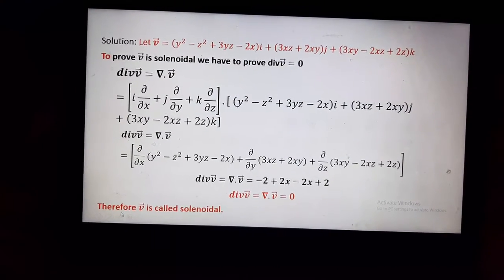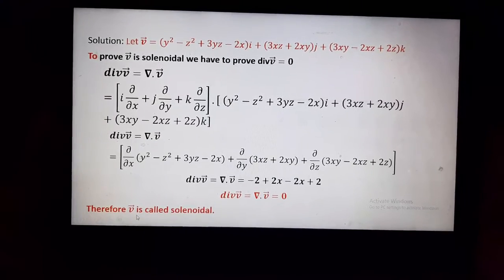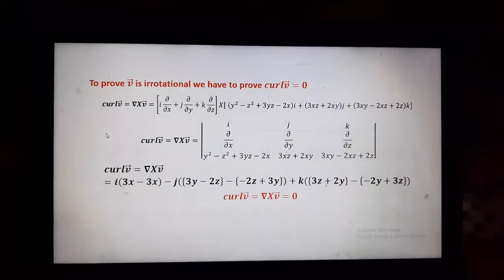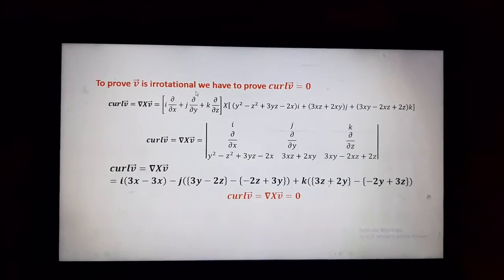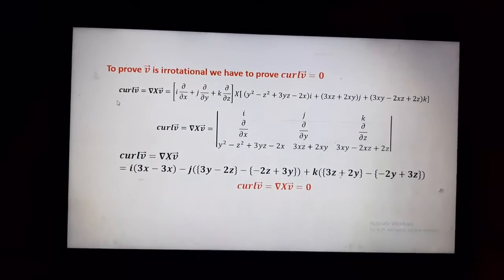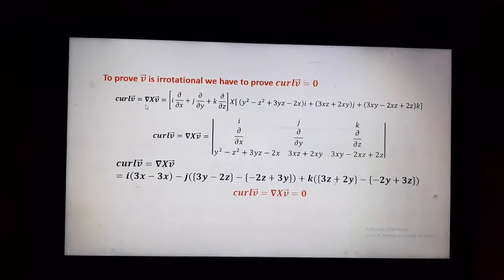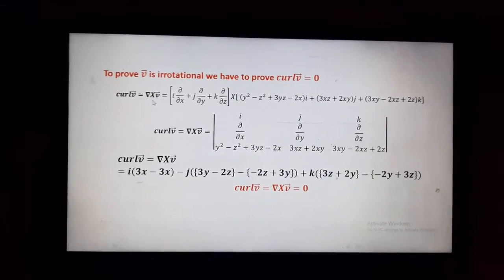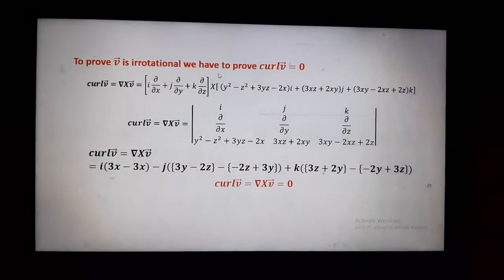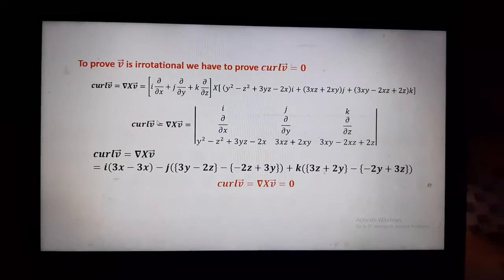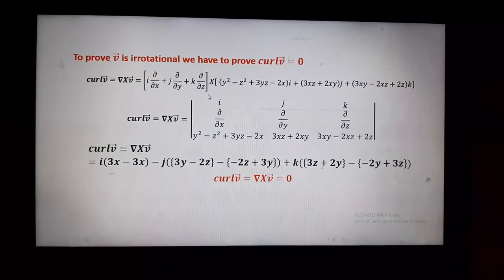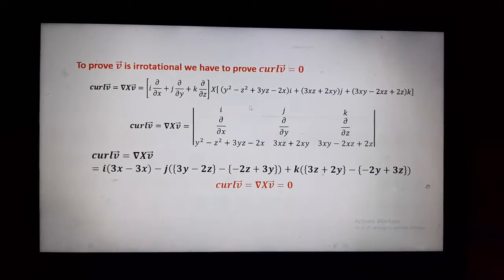Therefore we can say vector V is solenoidal. Now we will prove vector V is irrotational, for which we have to prove curl of V equals zero. That is curl of V equals del cross V. First we will write the operator del cross vector V.